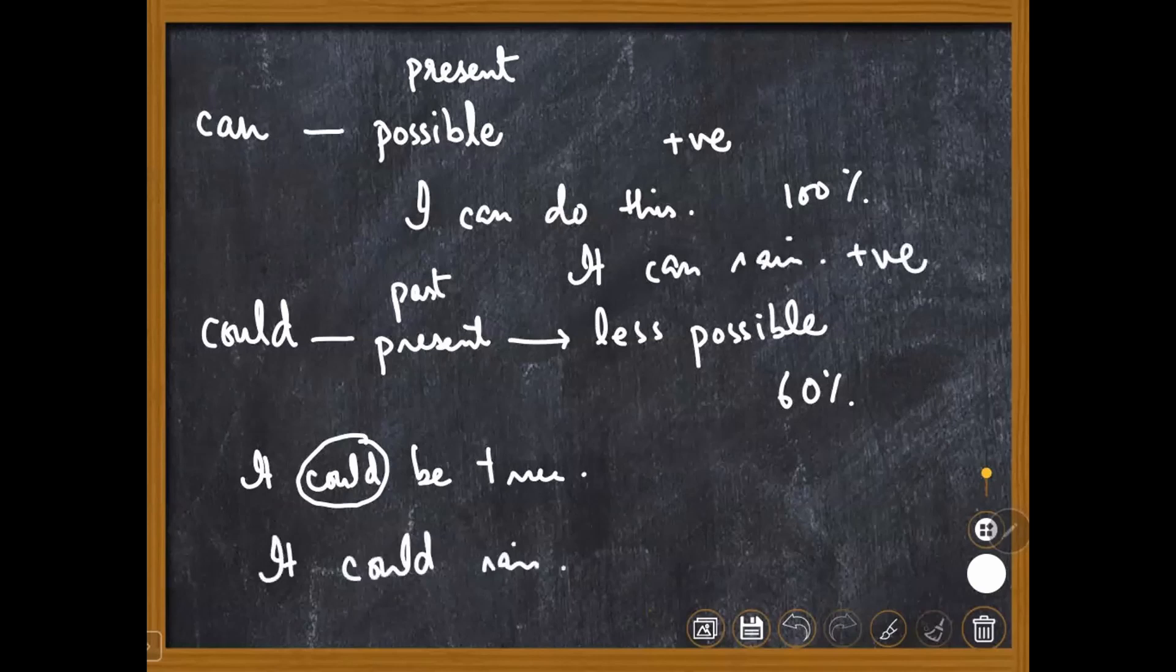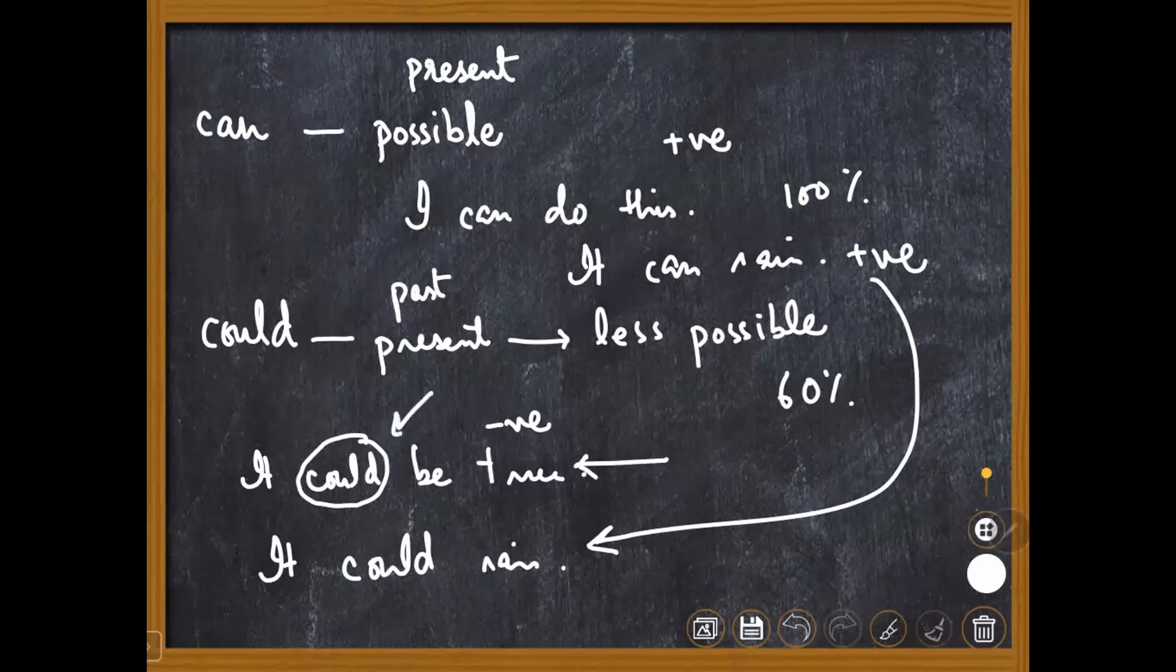Then it means that it could rain, and here I am saying that this is a negative possibility and this is not a good thing. It could be true - this could be an alarming thing which I am talking about. So it can be true and it could be true.